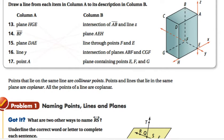Draw a line from each column in A to the description in column B. The first one says plane HGE. Plane HGE is the bottom of that surface, the very bottom of that box, and it also contains points E, F, and G. So it looks to me like that one goes to the bottom.